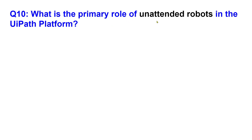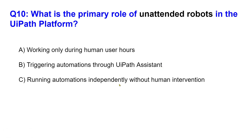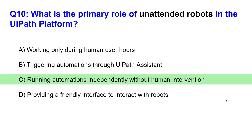Question 10: what is the primary role of an unattended robot in the UiPath platform? Option A: working only during human user hours. Option B: triggering automations through UiPath Assistant. Option C: running automations independently without human intervention. Option D: providing a friendly interface to interact with robots. The right answer is C.